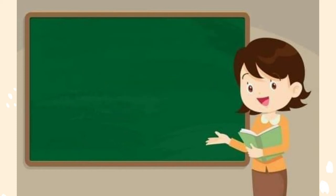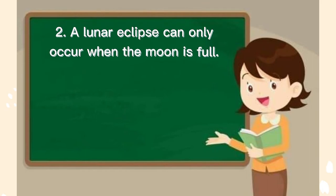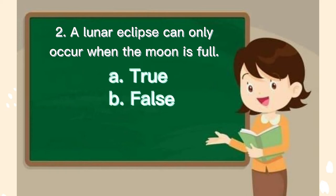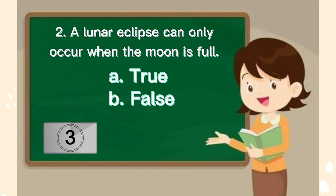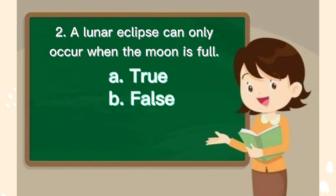Number 2. A lunar eclipse can only occur when the moon is full. A. True, B. False. The answer is B.